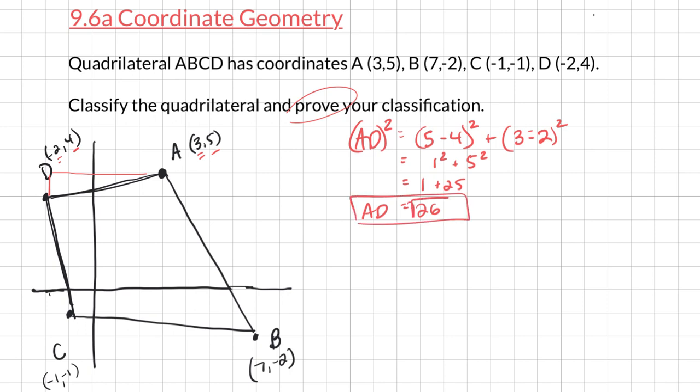Let's continue. I'm going to look at DC. And DC is going to be 4. Oops, I said 4 and I wrote 5. 4 minus negative 1 squared. Negative 2 minus negative 1 squared. That's a 5 squared and that's a 1 squared. So I'm going to get again DC equals square root of 26.